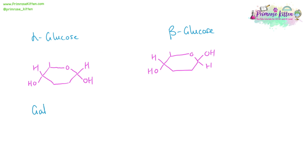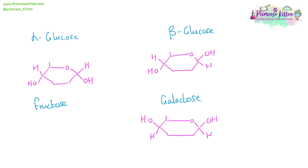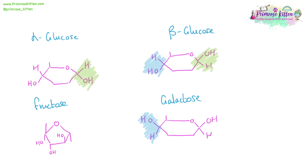Alpha and beta glucose are not the only monosaccharides you need to know about — you also need to know about galactose, which is similar in structure to beta glucose. There is also fructose, which is slightly different. The difference between alpha and beta glucose is the orientation of the OH group and the hydrogen on the right-hand side, whereas the difference between beta glucose and galactose is on the left-hand side, with the orientation of the OH group and the hydrogen group.